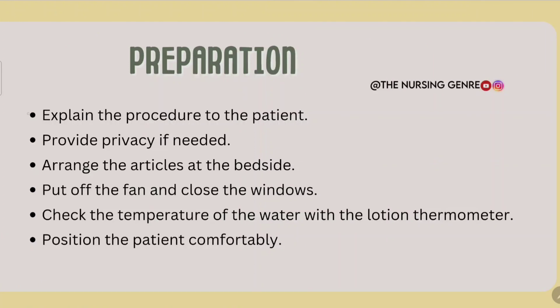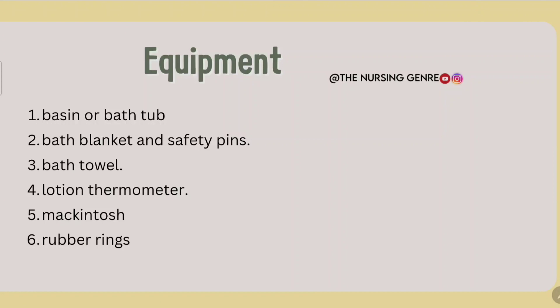Preparation: Explain the procedure to the patient and expose the perineal area. Provide privacy and arrange the articles at the bedside. Put off the fan and close the windows, as air flow will alter the water temperature. Check the temperature of the water using a lotion thermometer and position the patient comfortably. Equipment includes a bathtub, bath blanket, safety pins, bath towel with lotion, rubber rings to place at the bottom for patient comfort, and materials to prevent soiling.